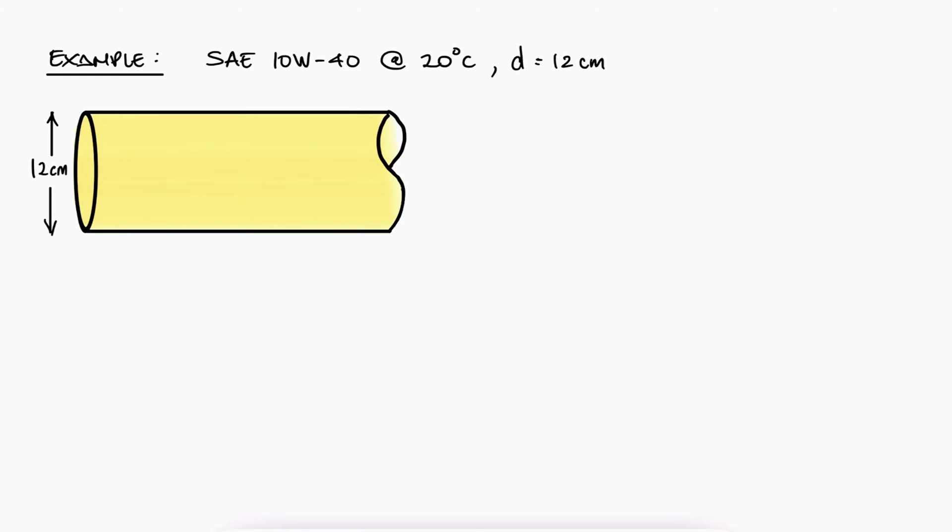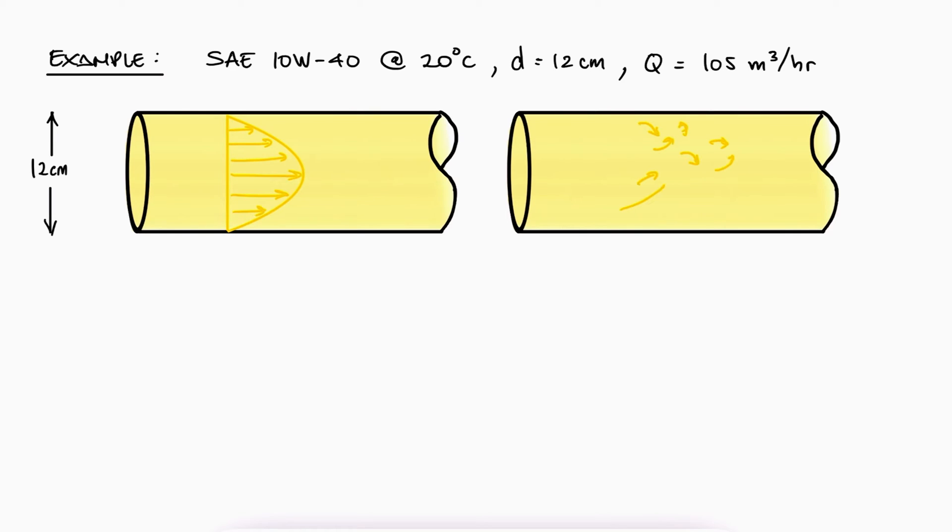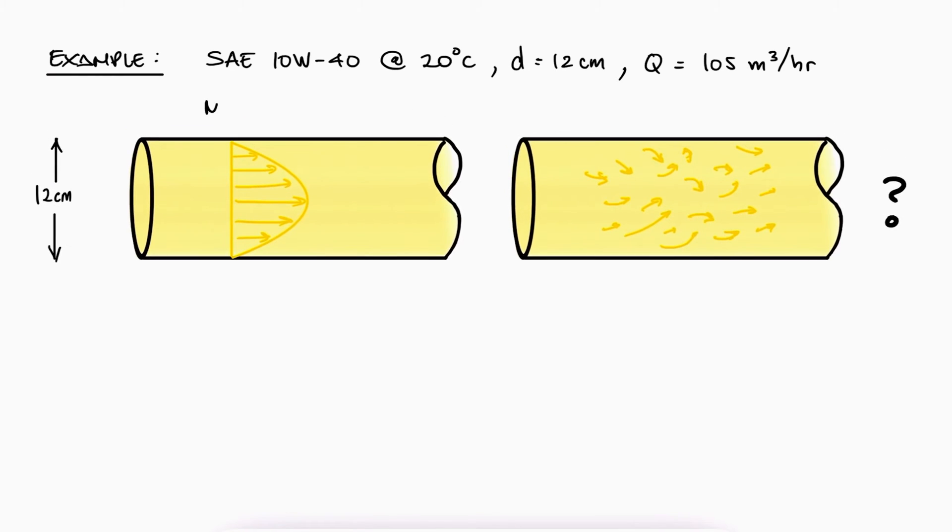If SAE 10W-40 oil at 20°C is flowing through a 12 cm diameter pipe at a volume flow rate of 105 m³/hr, is the flow laminar or turbulent? Additionally, what is the maximum flow rate that guarantees laminar flow?